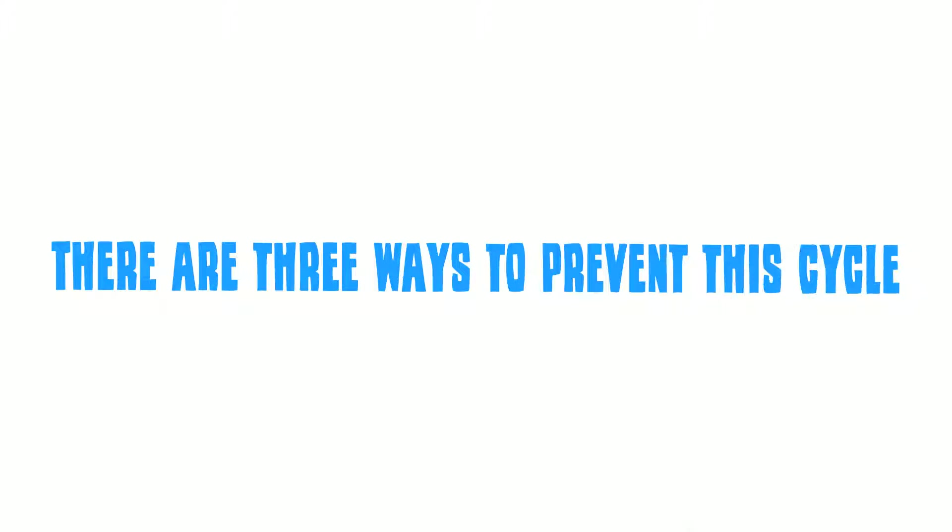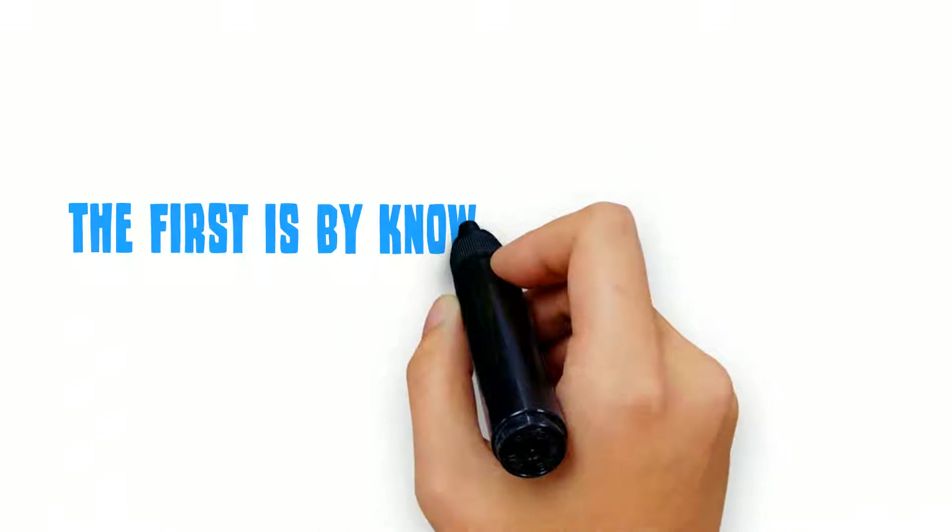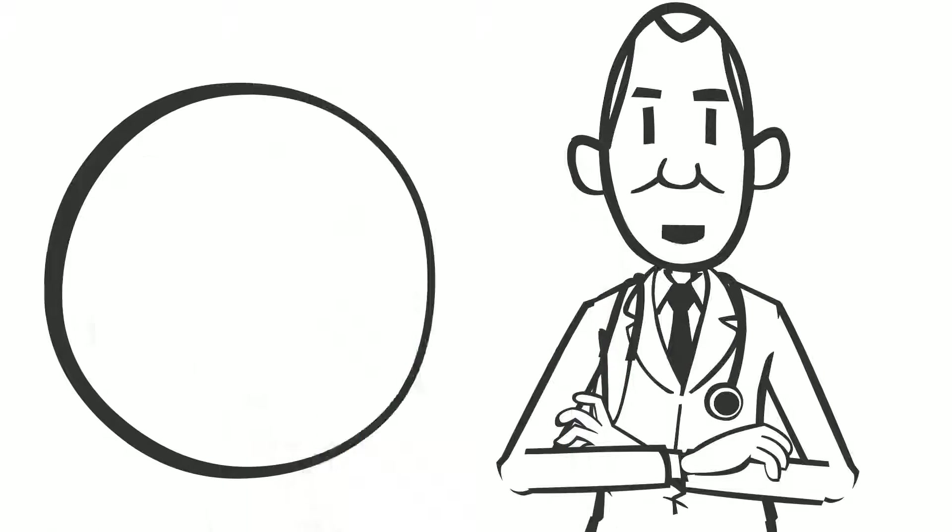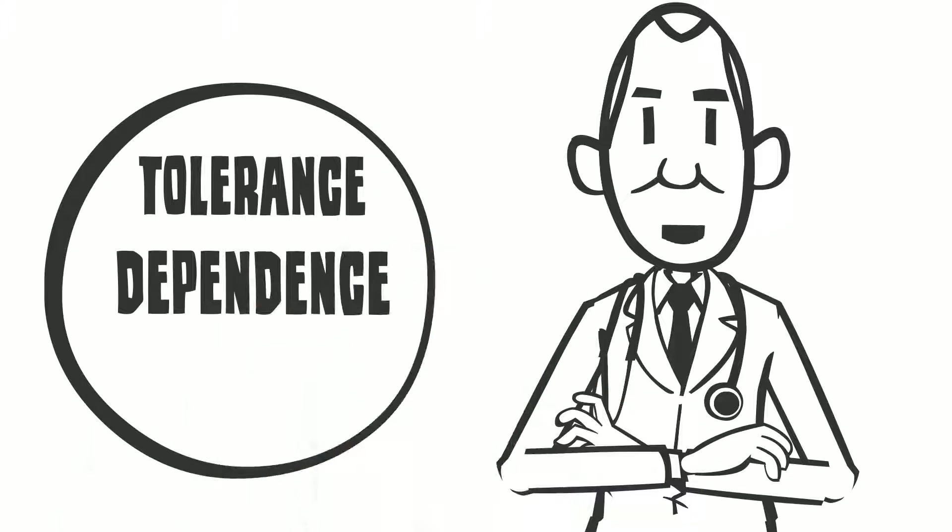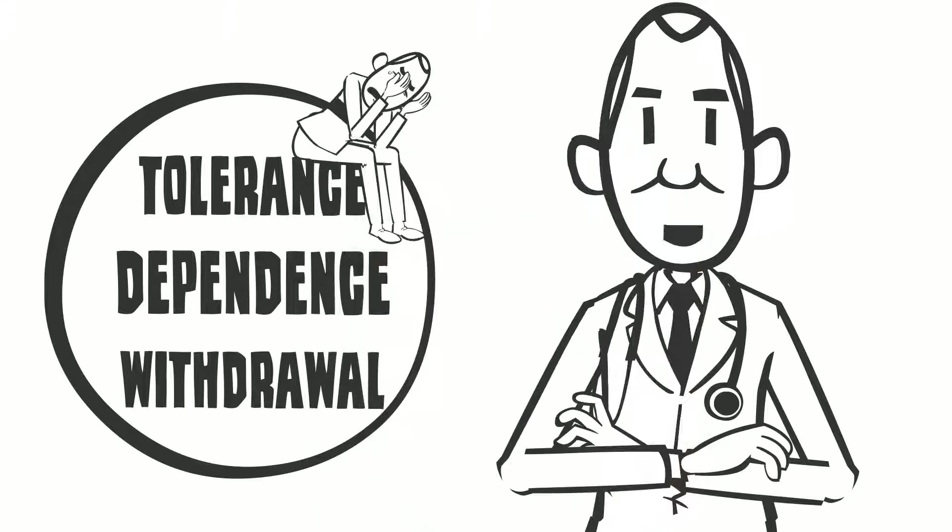There are three ways you can prevent this cycle. The first is by knowing that it is a real possibility. If you are watching out for tolerance, dependence, and withdrawal, you will recognize when these things are happening to you, and you can do something about it.